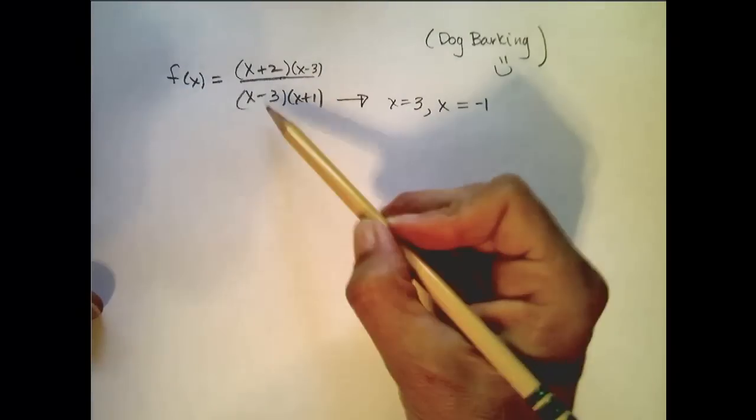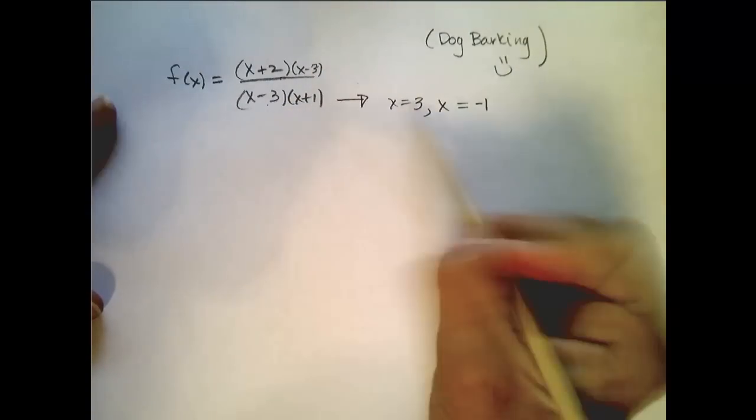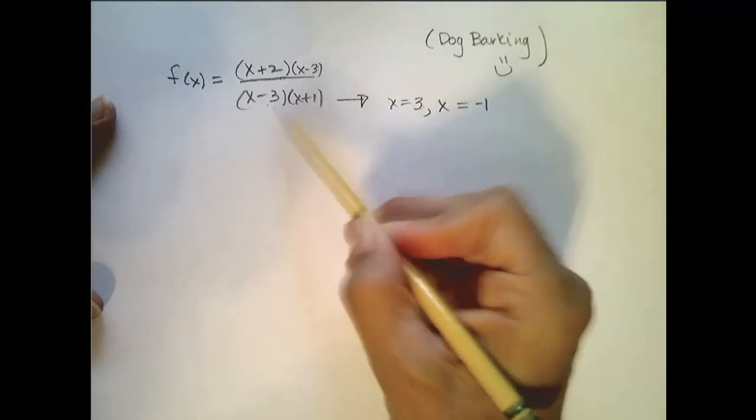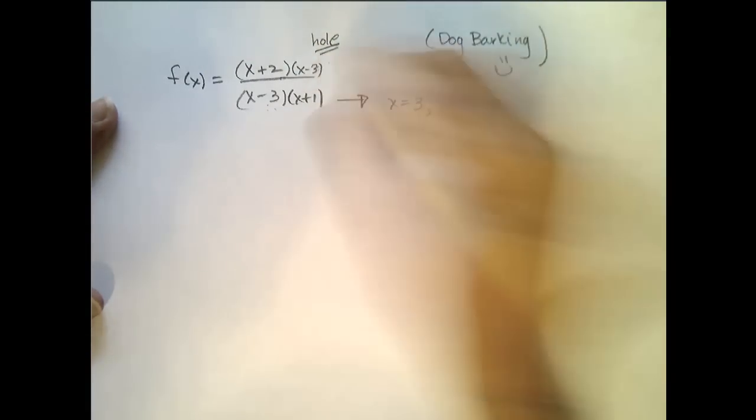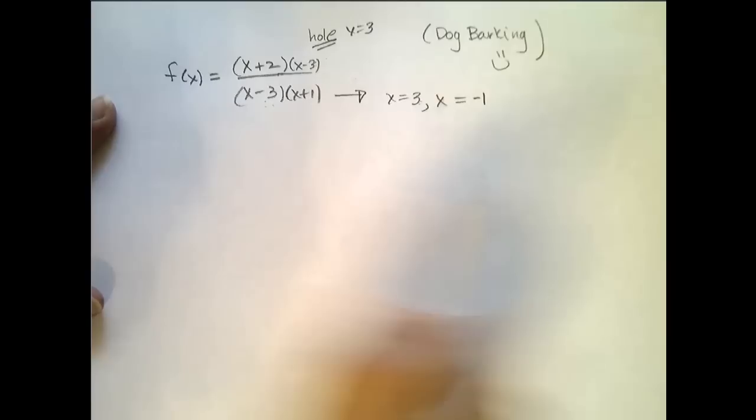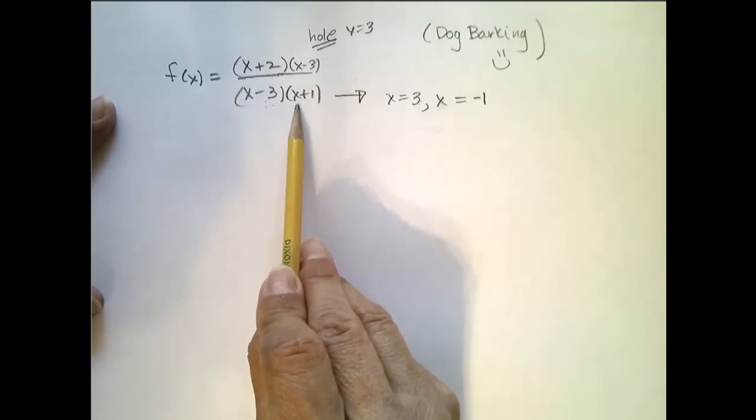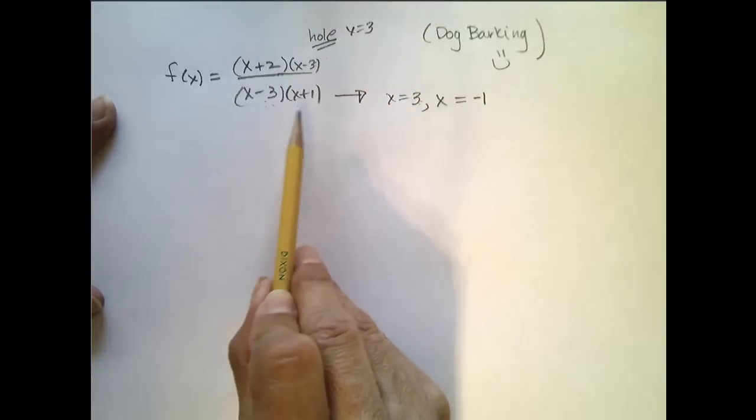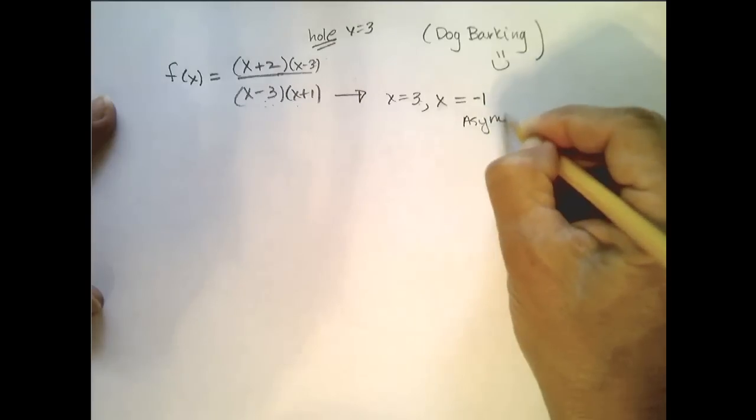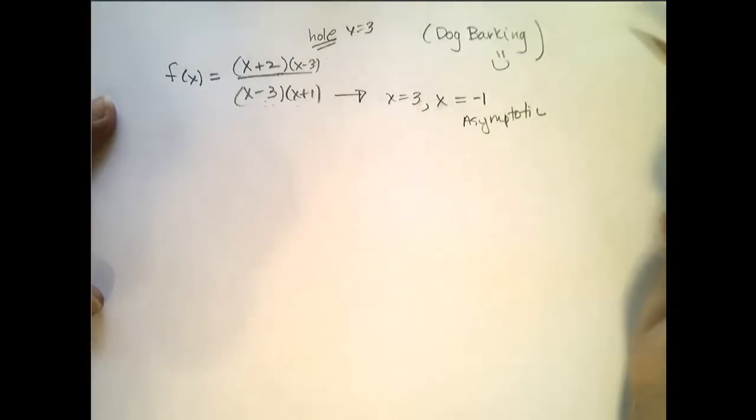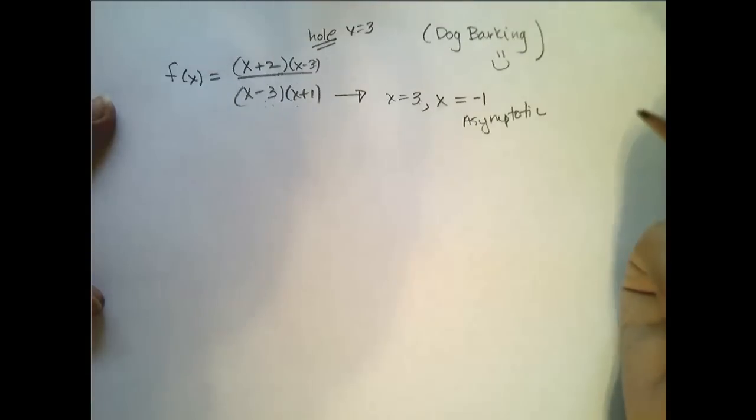Now, if you notice that when x equals 3, it's 0 on both top and bottom, and that actually creates a hole in the graph at x equals 3. At x equals negative 1, since it's not 0 at the top as well, this actually creates an asymptote. So if it's an asymptotic discontinuity, we can't remove it by creating this new function.